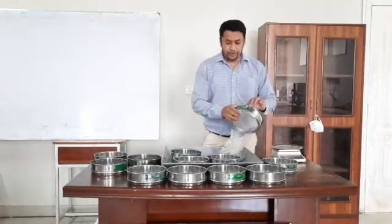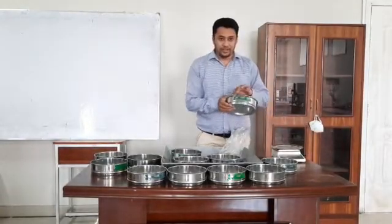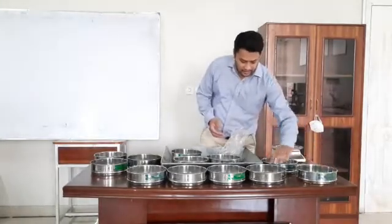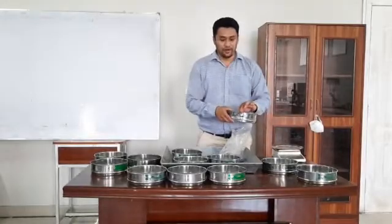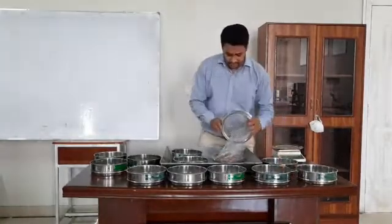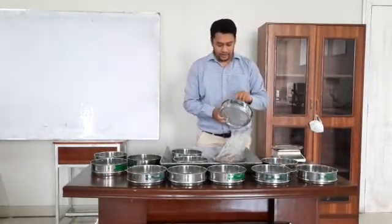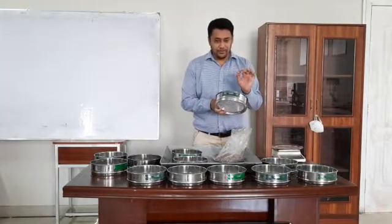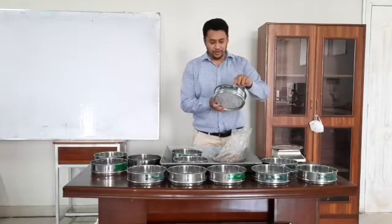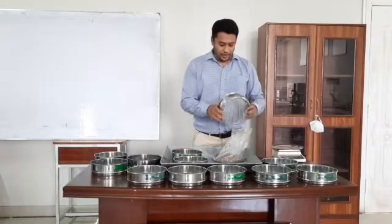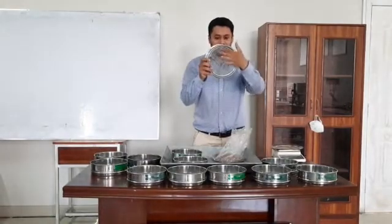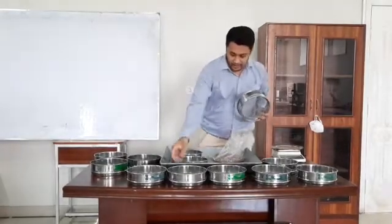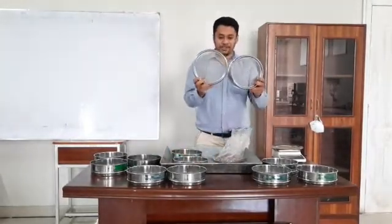First of all we use different sieves. If you read this tag, there is sieve number 8, then sieve number 10, and sieve number 4. The size and number of the sieve is written on the tag. Sieve number 4 has a larger opening and sieve number 16 has a smaller opening.